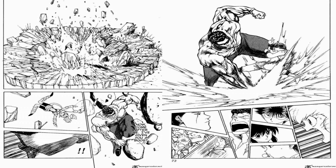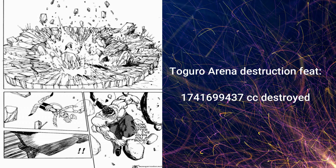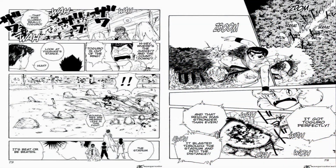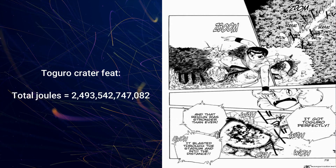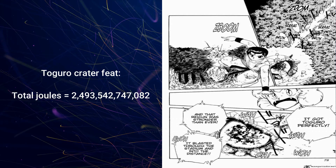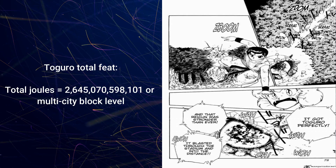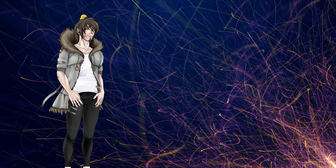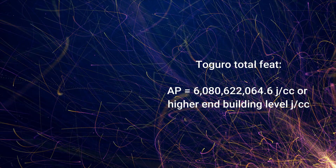First, the arena itself: Toguro easily showed to violently fragment the entire thing of around this many cubic centimeters of space, coming in with a total joules of this amount. Next, the crater: we can easily see a crater of a total volume of this many cubic centimeters, and via cratering, a total joules of this amount. Adding both parts together, we find for the full feat a total joules of this amount — or multi-city block level. As for the AP, since there's no air pressure this time, we're seeing this many joules per centimeter cubed, or higher-end building level.